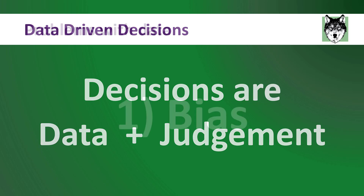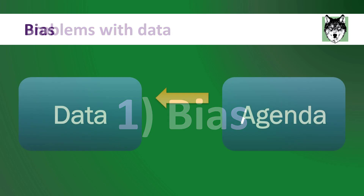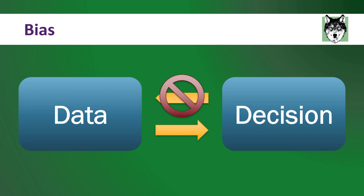Number one: bias. People make this mistake all the time. People will often have their own agenda and then find data to support their opinion. These people use data to shut down arguments — they'll say things like, 'The data says this, so you have to do what I say. End of discussion.' The issue is that oftentimes data can be interpreted in different ways, so you have to be really careful your bias is not influencing the data. Our goal is to get the best decisions, so ideally you want the data to be influencing your decision, not the other way around.